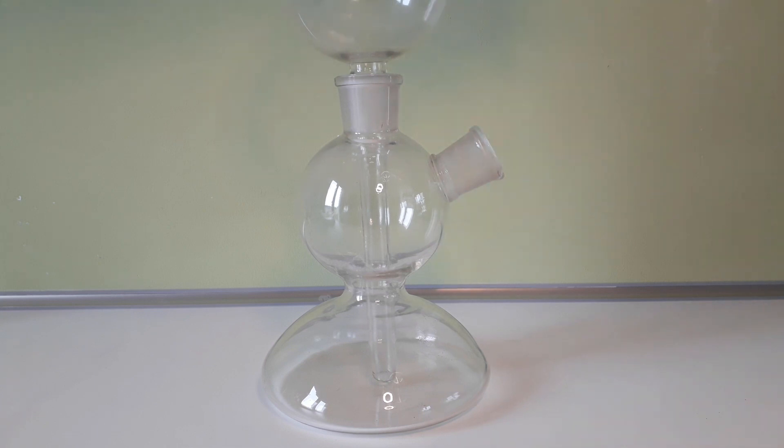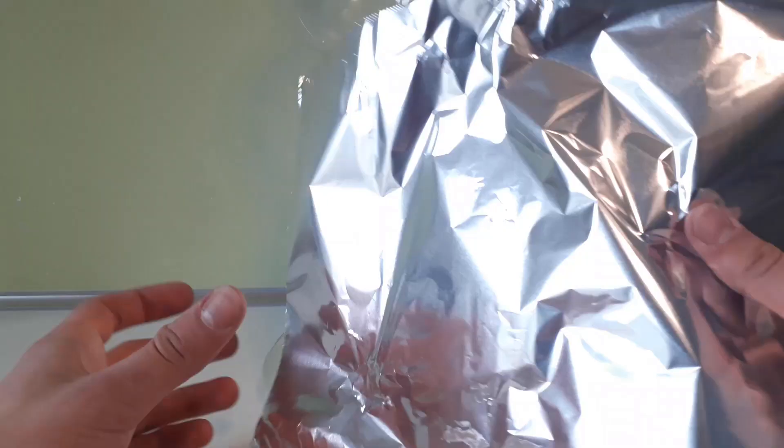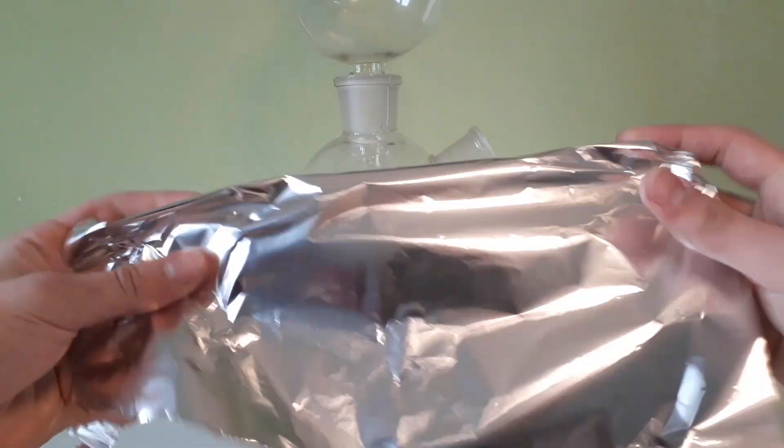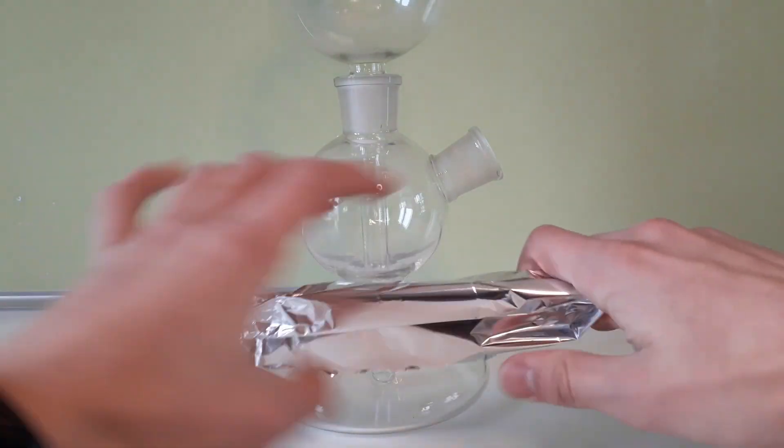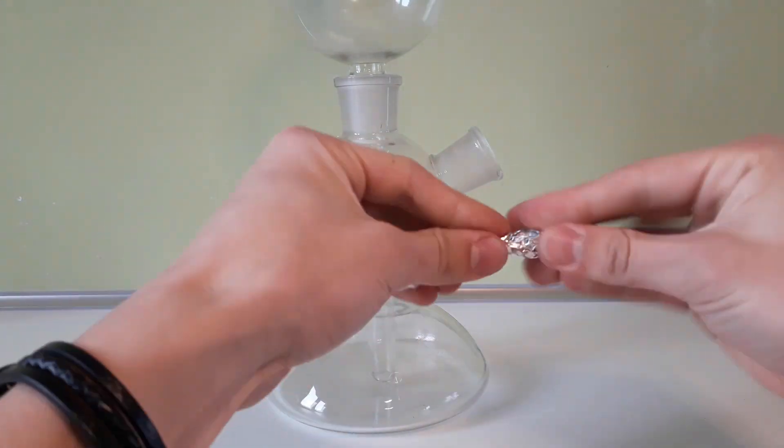I first remove the stopcock and take out a sheet of aluminum foil. I roll the foil into a small strip and place it into the second chamber of the Kipp's apparatus.